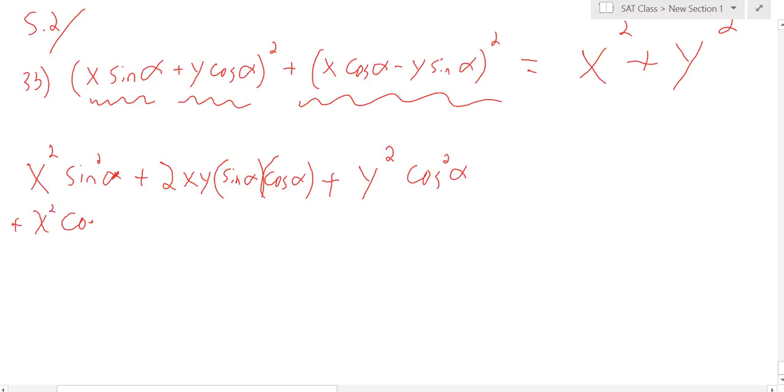minus all of them multiplied together and doubled. So, 2xy sine alpha cosine alpha. These alphas are annoying. And then plus y squared sine squared alpha.